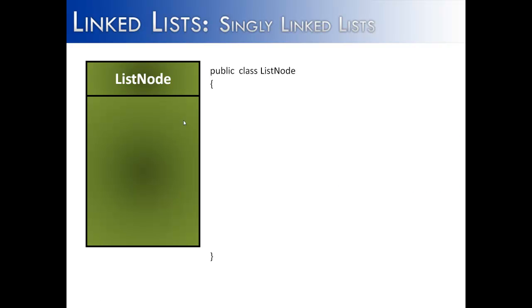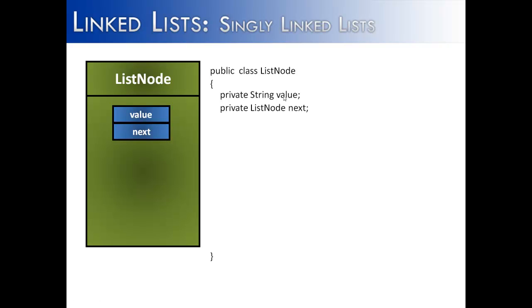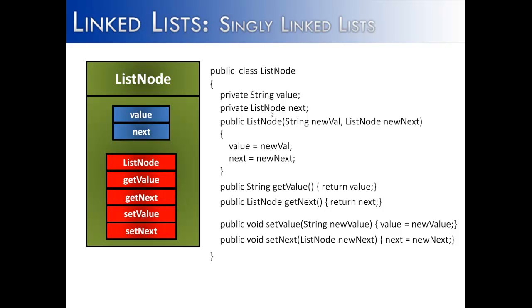This is what a list node would look like in Java. The first part is the value — I used strings for my linked list, so it's going to be a private string, and we're just going to call it value. The other part is a reference pointing to the next node in the list. You might think it's weird that you're creating a list node inside of the list node class, but it is completely legal and legitimate in Java. Next are the methods. The first method is the constructor, which simply defines what the value is and what the next node will be created in our linked list. Then we have our getters, to get the value and the reference that's next in the list. And lastly, we're going to be able to set the value and set the memory reference inside of the list node.